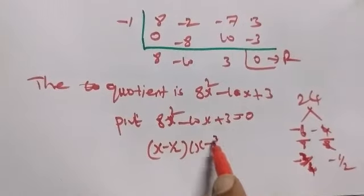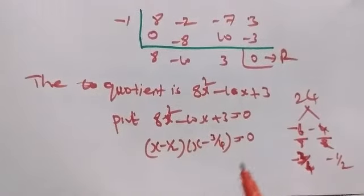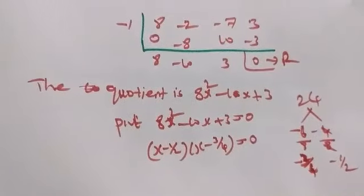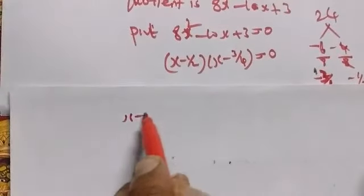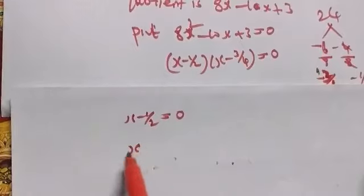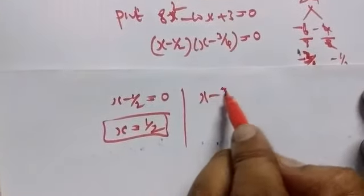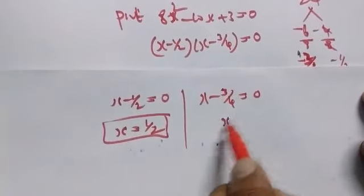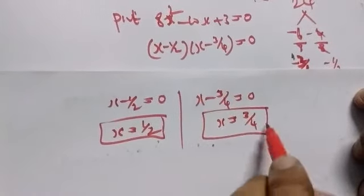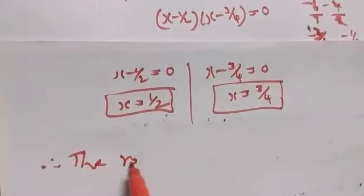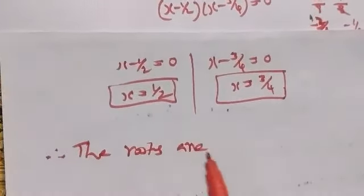From the first factor 2x - 1 = 0, we get x = 1/2. From the second factor 4x - 3 = 0, we get x = 3/4.